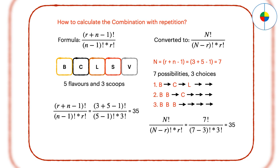Since you can choose all 3 scoops in banana, or 2 scoops in chocolate, the scoops you choose can be duplicated. This is a combination with repetition. The combination will be 35.